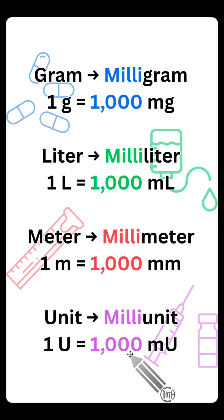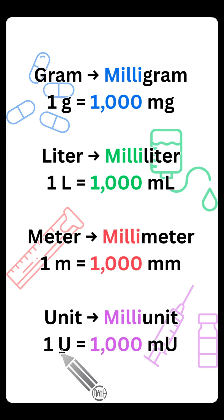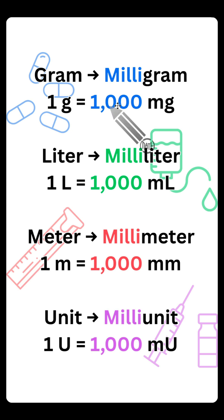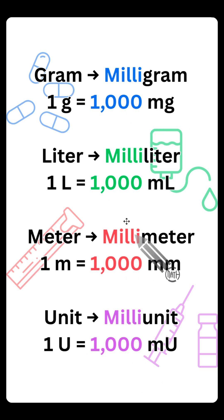This one at the bottom — milli units — I do see students get tripped up on that quite often, but it follows the same rule. You have your bases: grams, liters, meters, units. Put the word milli in front and that represents 1,000 of those to give you that base. With the exception of the meter, the other three are very common — you use them over and over in your med dosage courses. There are other conversions, but the milli secret is one worth remembering.